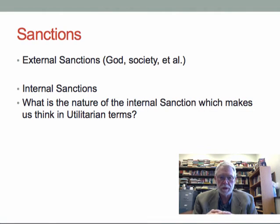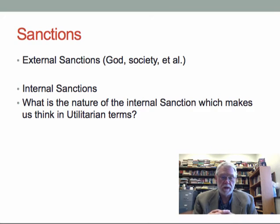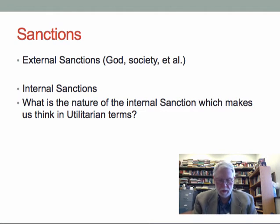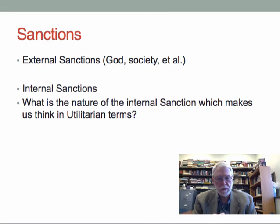The sanctions that can be much more powerful are internal sanctions — those found right inside ourselves that prompt us to act in certain ways. Mill thinks there are powerful internal sanctions that propel us to act in accordance with utilitarian standards. The utilitarian standard is expressed in the mantra: the greatest good for the greatest number, where good means pleasure and the greatest number means the greatest number of human beings.